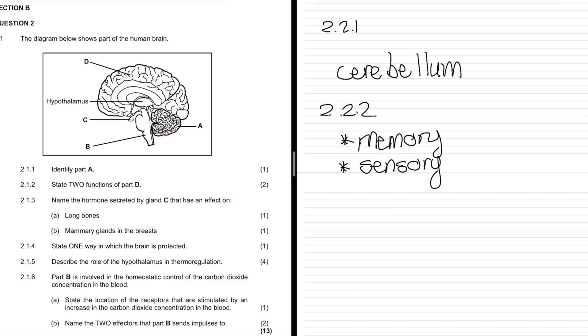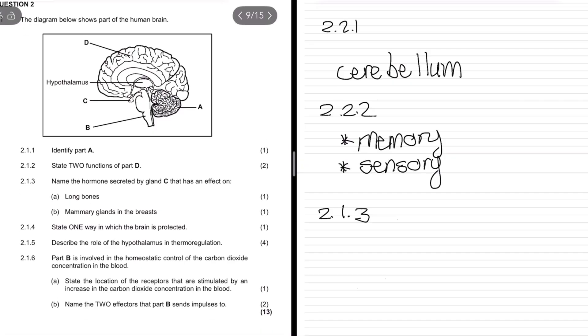Then 2.1.3 - name the hormone secreted by gland C that has an effect on long bones. We know that long bones make people gigantic, so if that's the negative part of having too much of this hormone, it could probably be growth hormone.